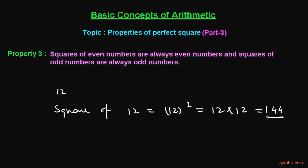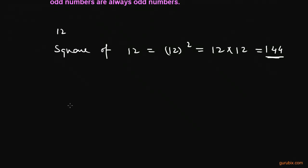We see that 144 is also an even number. Therefore, the square of an even number is always even. Similarly, suppose we have a number 13, and if we find the square of 13, then it will be 13 squared.